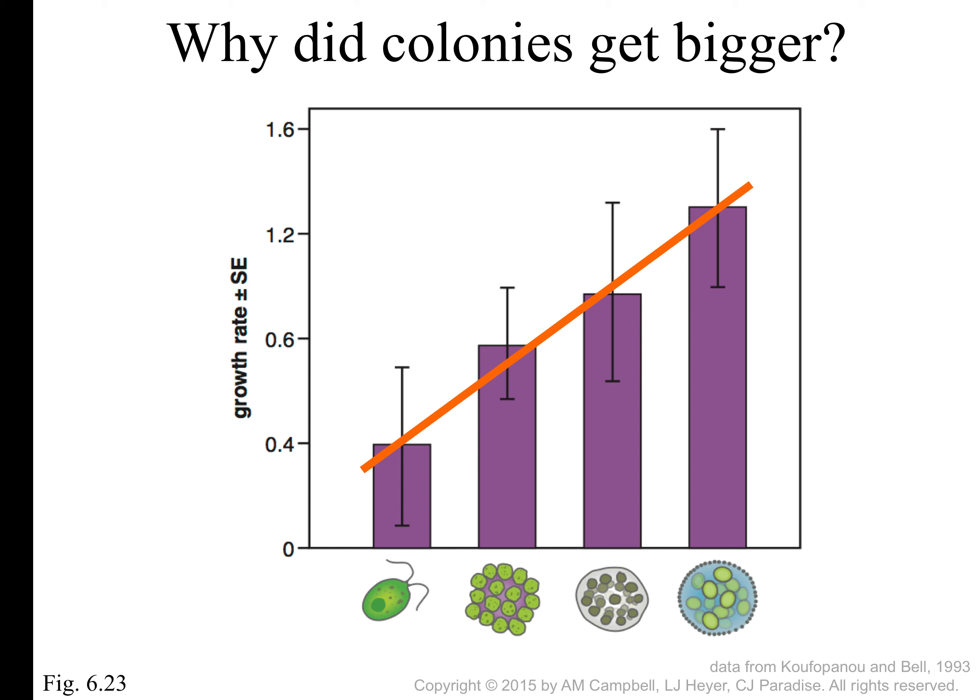It may be that being in a colony gives you an advantage in that you can grow faster. In a natural selection situation, if you grow faster than the organisms you're competing with, you can get resources faster, reproduce at a higher rate, and have a selective advantage. These experiments were done under high nutrient conditions — under low nutrient conditions you don't get this difference. So when times are good, it may be an advantage to be a multicellular organism.